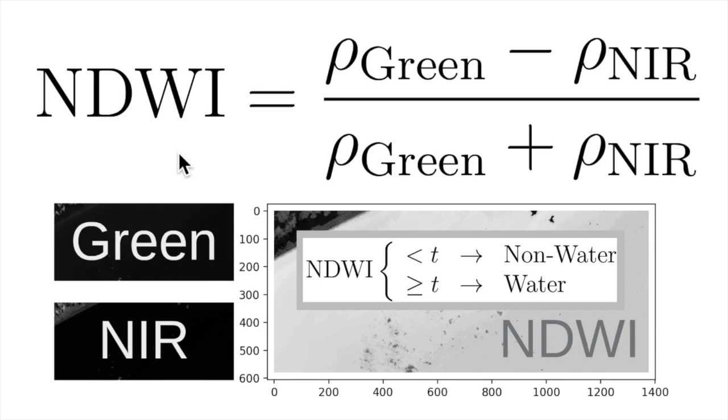And then we apply this basic threshold. We compute when NDWI is below a certain threshold, we classify as non-water target. When this is higher than a threshold T, we can define it as the target water. It's our decision to set this value of T.